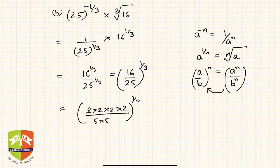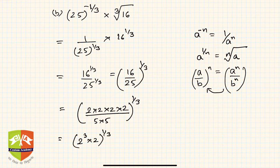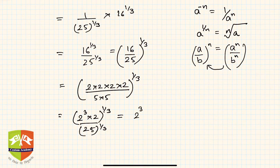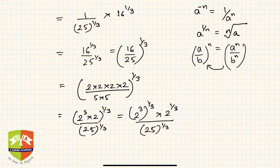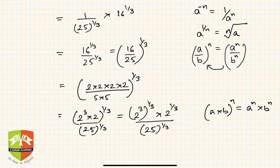We can write this as (2^3 × 2) whole to the power 1 by 3, divided by 25 to the power 1 by 3. This becomes 2^3 whole to the power 1 by 3, times 2 to the power 1 by 3, divided by 25 to the power 1 by 3. The rule applied is (a × b)^n = a^n × b^n, treating 2^3 as one entity.